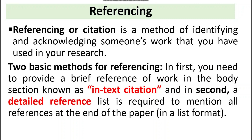Referencing is a method in which we acknowledge or identify the work that we have used in our research paper. When we are writing our research and we use another source, we acknowledge that source — this method we call referencing or citation. We have two basic methods of referencing: first, you need to provide a brief reference in the body section, which we call in-text citation, and second, a detailed reference list which we add to the end of the paper.